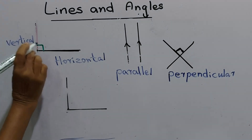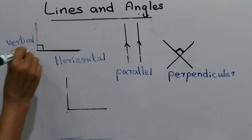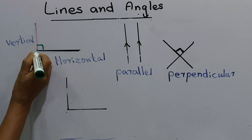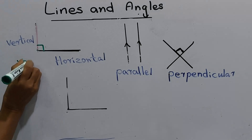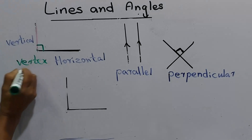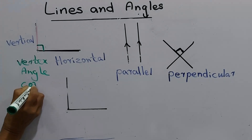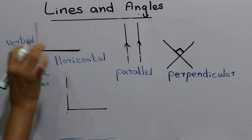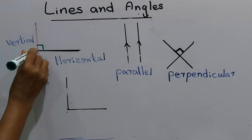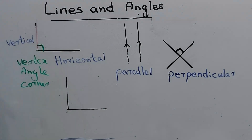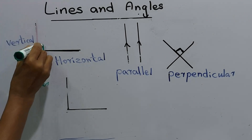When two lines meet together, that point is called a vertex, or a corner, or an angle. We use these three words for this. When two lines meet together, this point is a vertex and this is an angle.